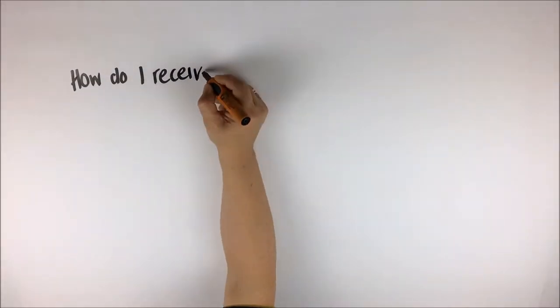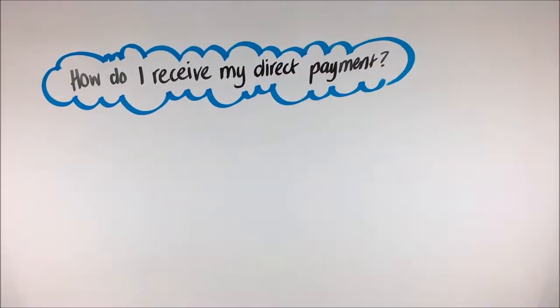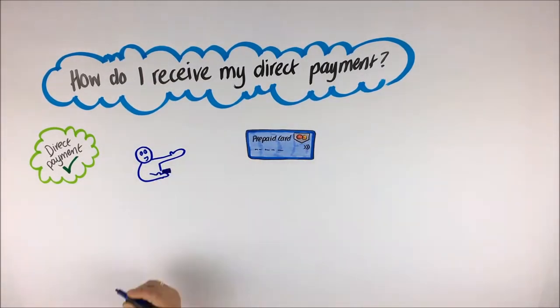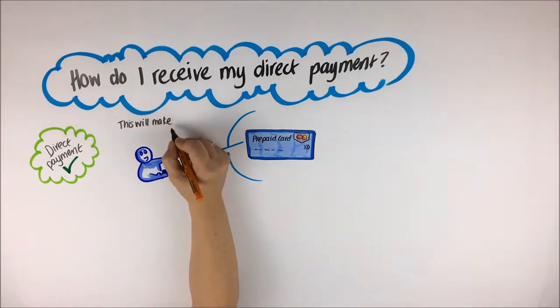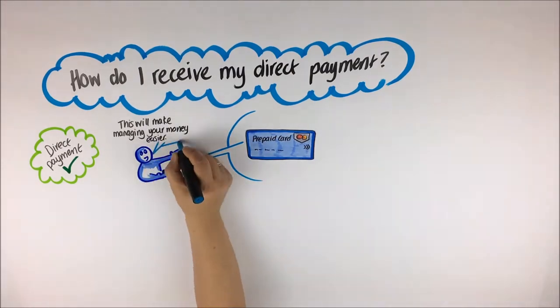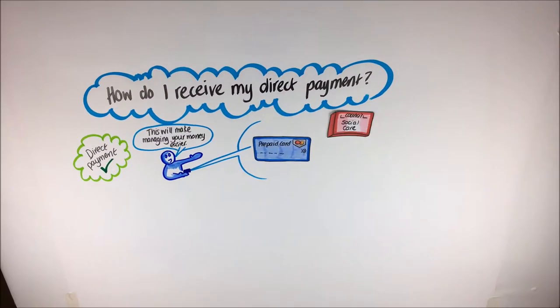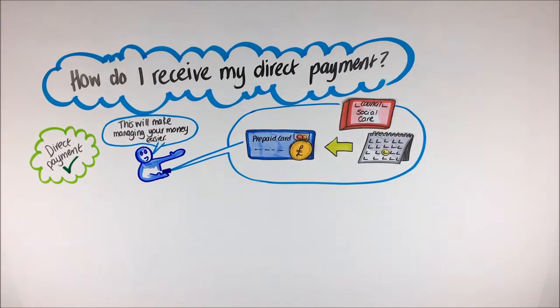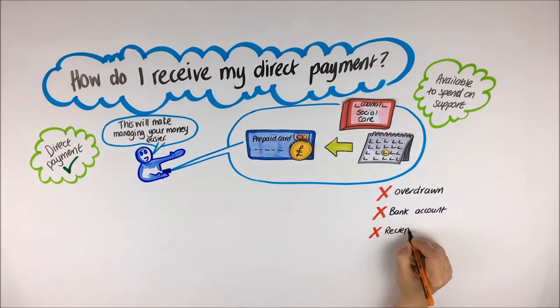How do I receive my direct payment? If you choose to manage your personal budget with a direct payment, you will be offered a prepaid card. This will make managing your money easier. You may be worried that managing a direct payment will be complicated. However, if you use a prepaid card, the council will load it every month with an agreed amount of money. You will then be able to pay for your care. You won't be able to go overdrawn. You don't need to have a bank account. You don't need to keep receipts of financial records.